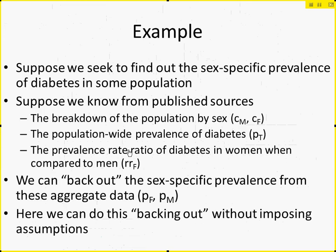I'll give one or two examples. Suppose we have information on the breakdown of the population by sex — how many men, how many women — and the overall prevalence of diabetes in the total population, and suppose we have the ratio of prevalence among women and men from some other report in the literature, say from another province. We might want to assume a similar ratio occurs here. If we make these assumptions — that the other province is representative of our own — we could back out the sex-specific prevalence from these aggregated data.